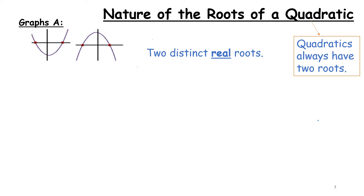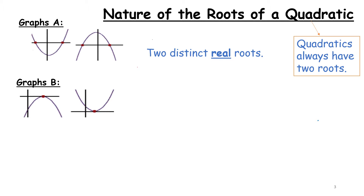In graph A we see that there are two distinct real roots — the word distinct means different. We can clearly see on both graphs there are two red dots representing roots in two different places. In graph B, we only have one dot. We know quadratics always have two roots, however these two roots are the same — there is only one distinct real root.